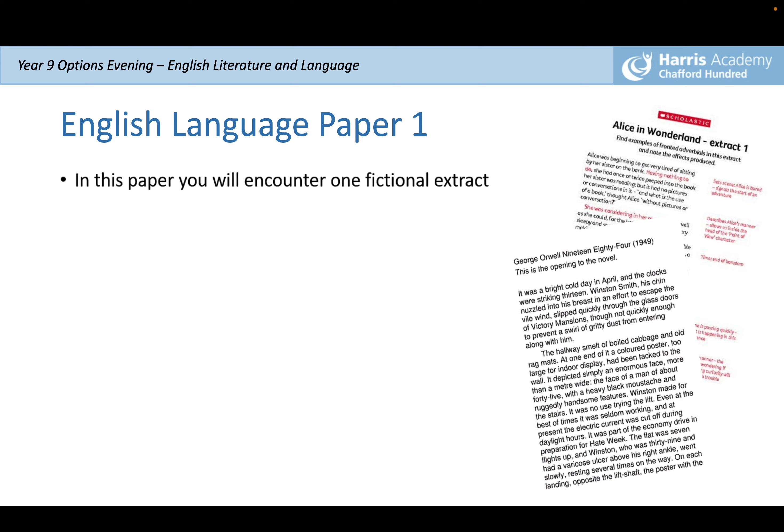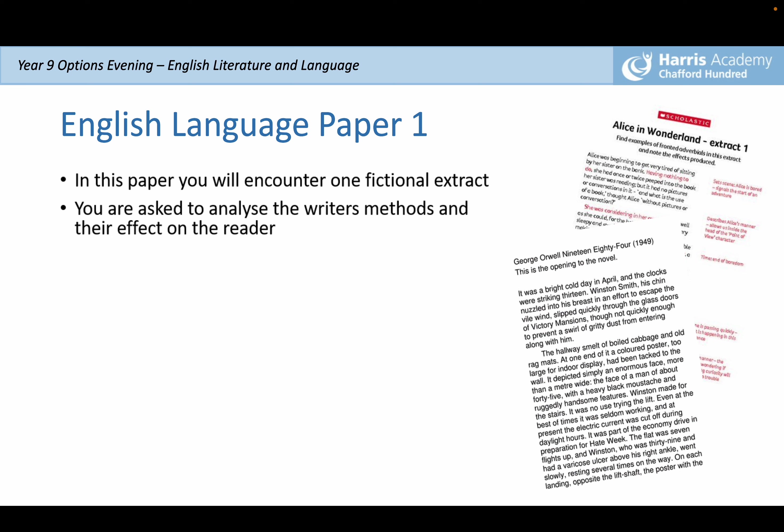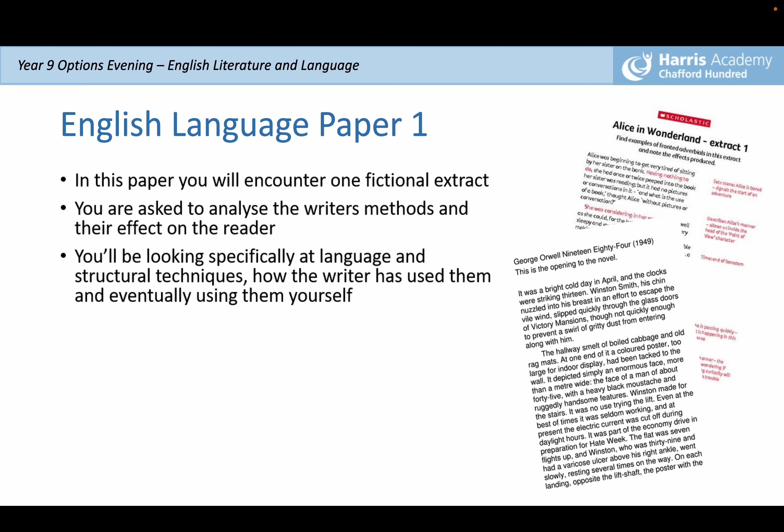In English Language Paper 1, you will encounter one fictional extract. In the past we've looked at texts like 1984 and Life of Pi — a broad variety to get a real feel for what may come up in the exam. You're asked to analyse the writer's methods and their effect on the reader, looking specifically at language and structural techniques, including poetic techniques, metaphors, and similes.